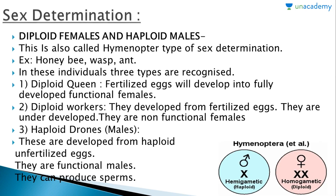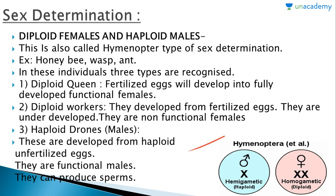The next type is diploid females and haploid males, also called the Hymenoptera type of sex determination. Examples include honeybee and wasp. Three types are recognized: diploid queen, diploid workers, and haploid drones. The diploid queen develops from fertilized eggs into fully developed functional females. Workers are underdeveloped non-functional females from fertilized eggs. Haploid drones are males developed from unfertilized eggs; they are functional and can produce sperms.